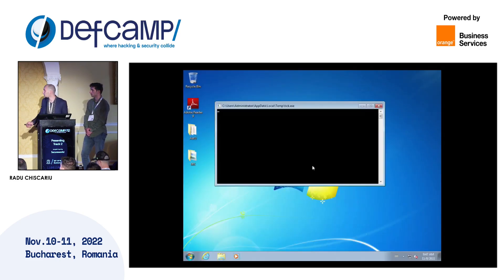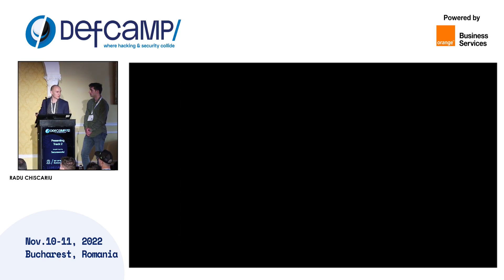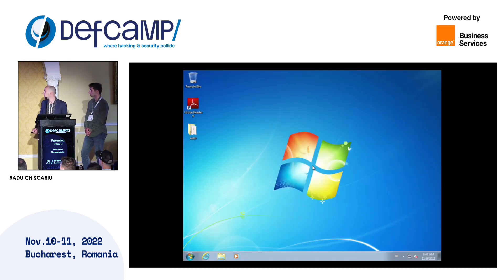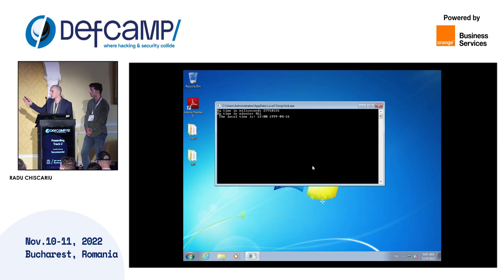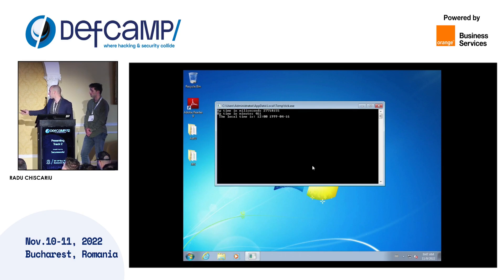In the same scenario with the same sandbox, it uses the GetTickCount and GetSystemTime hooks. As you can see, we have the uptime in minutes and milliseconds. The sandbox just started, so it's obviously not 461 minutes of uptime. And the local time shows 1999-04-16, whereas the actual date is 11-09-2022. So we actually hooked GetTickCount and GetSystemTime and manipulated the return values to trick the malware into running.